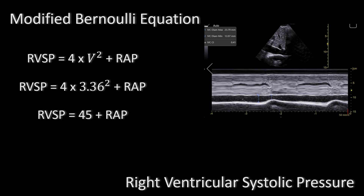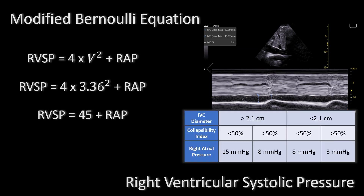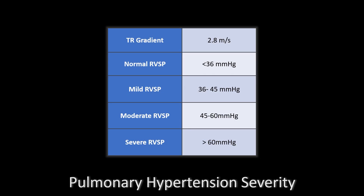In this case, the IVC maximum diameter is 2.3 centimeters and it is less than 50 percent collapsible, so the right atrial pressure is estimated to be 15. So the right ventricular systolic pressure will be 45 plus 15, which is 60 millimeters of mercury. Once you have the TR jet peak velocity, you plug it into the modified Bernoulli equation and you get the right ventricular systolic pressure.